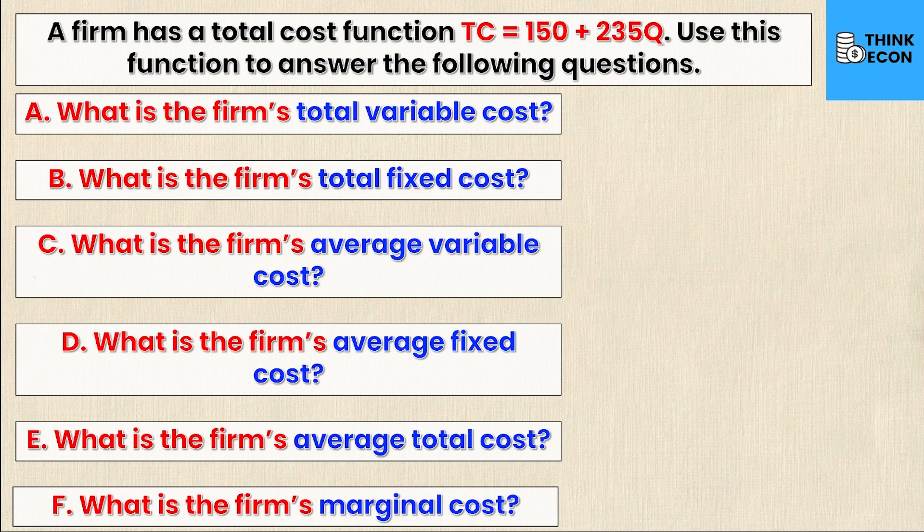So let's start with part A. What is the firm's total variable cost? We know that total cost consists of two different costs added together, the total fixed cost and the total variable cost. Well, the variable cost is variable as it depends on how many units are produced. So looking at our total cost equation, it would be the section of the total cost that depends on Q. And in this case, it would have to be multiplied by Q.